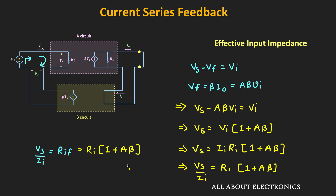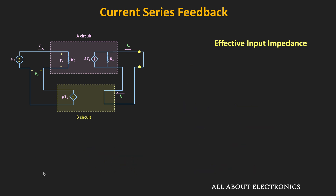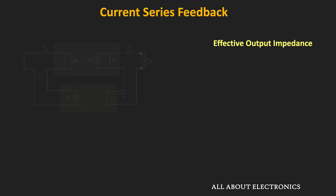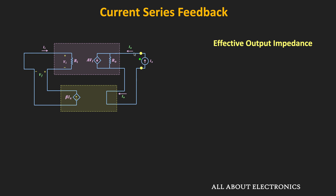Because of the series connection on the input side, this effective input impedance increases by the factor of 1 + Aβ. Now let us find the effective output impedance. To find this, we set all independent sources to zero — the voltage source Vs becomes a short circuit — and apply a test current Ix on the output side. The voltage across this test current source is Vx, and the ratio Vx/Ix represents the effective output impedance Rof.